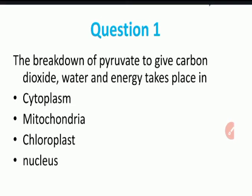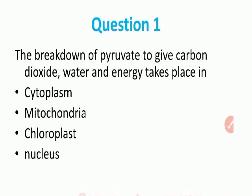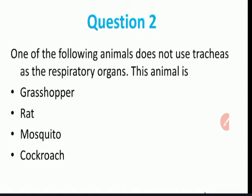A question arises: the breakdown of food to give CO2, water, and energy takes place in — cytoplasm, mitochondria, chloroplast, or nucleus? Please comment your answer. Second question: which of the following animals does not use trachea as the respiratory organ — grasshopper, rat, mosquito, or cockroach?